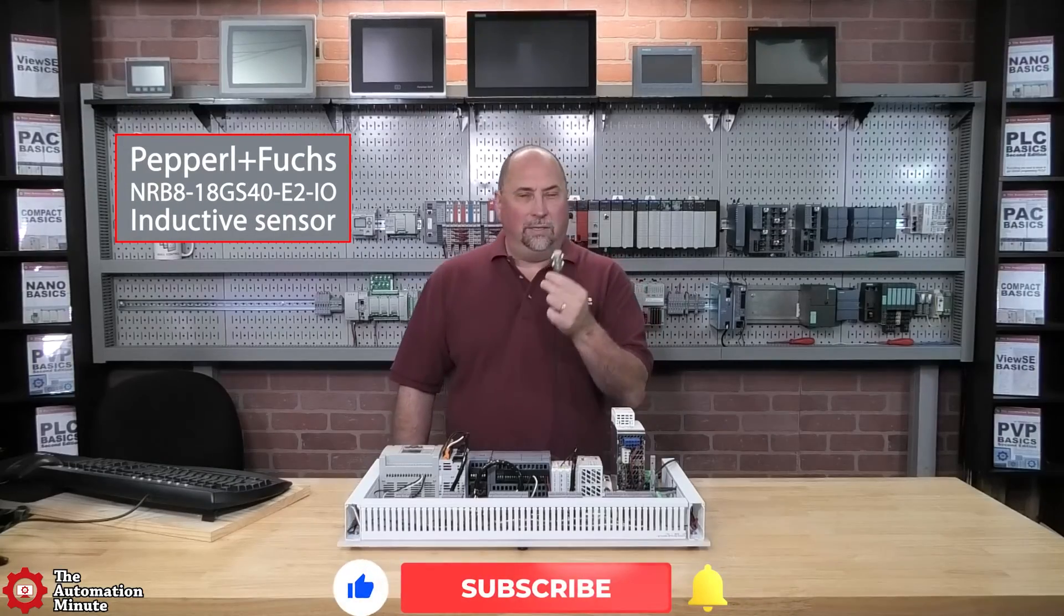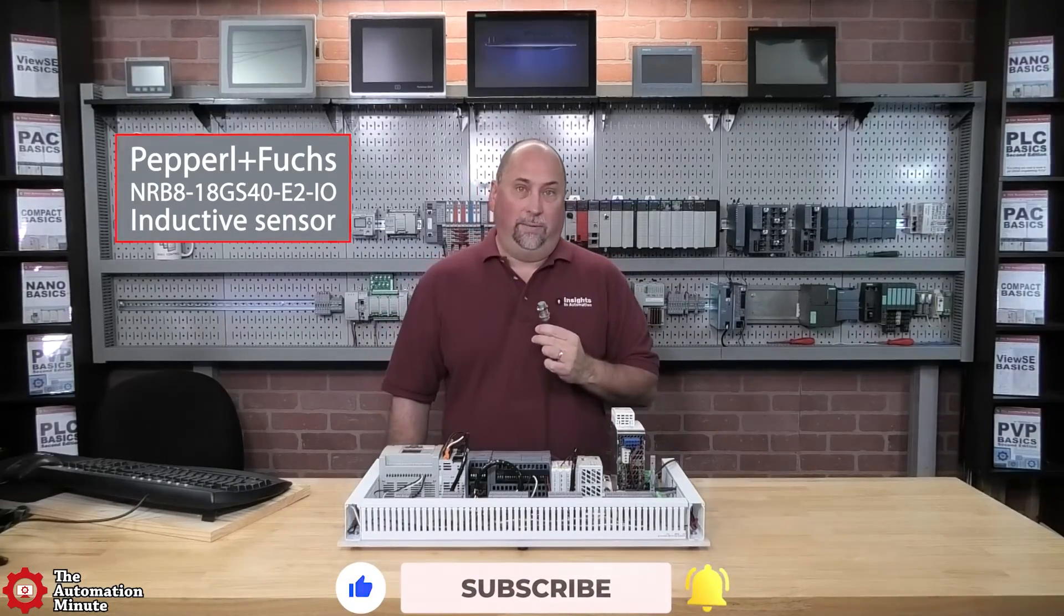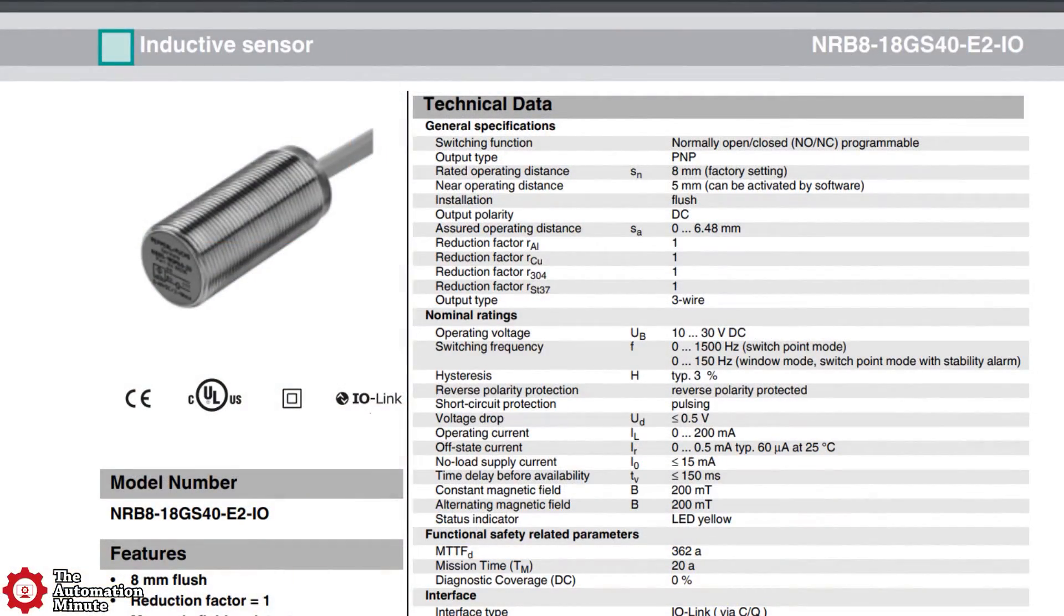Today we're taking a first look at an inductive proximity sensor from P+F, the NRB8-18GS40. It's an IO-link-enabled prox that comes with a PNP output, which defaults to normally closed but can be programmed to be normally open.